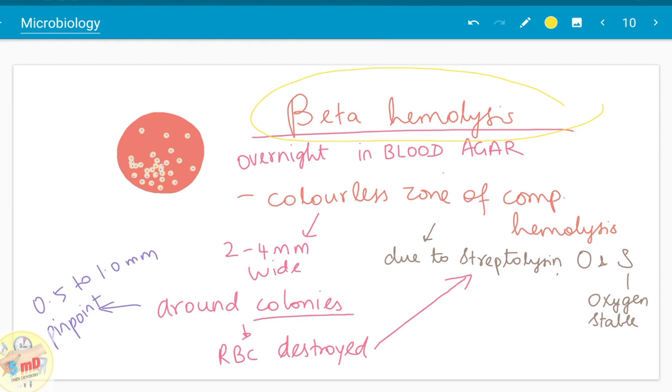Beta hemolysis is what we will see now. If you leave the bacterial strains overnight in blood agar, colorless zone of complete hemolysis appears. The complete hemolysis is associated with the beta strains. The colorless zone ranges from 2 to 4 millimeter wide, whereas the colonies range from 0.5 to 1 millimeter wide. They are pinpoint in appearance. And around these colonies, RBCs are destroyed for 2 to 4 millimeter wide, hence the colorless zone.